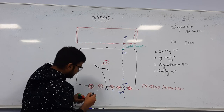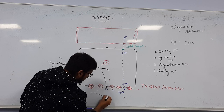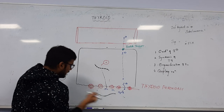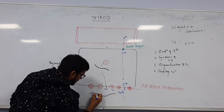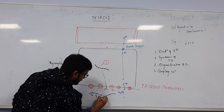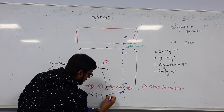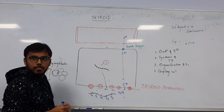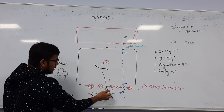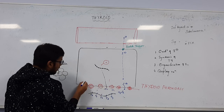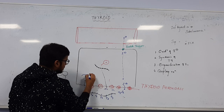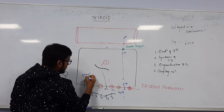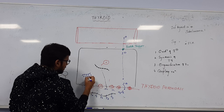The next step is to separate T3, T2, and T4 from the thyroglobulin chain, so we get pure T3 and T4. Within the follicular cell, lysosomes come and attach to the vesicles. Lysosomes have hydrolytic enzymes which are released into the vesicle, causing breakdown of the thyroglobulin chain.